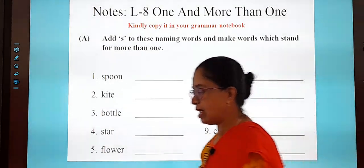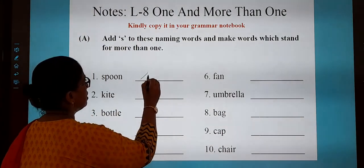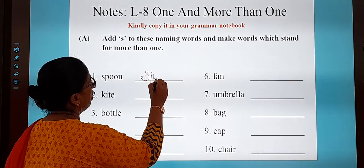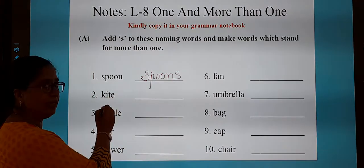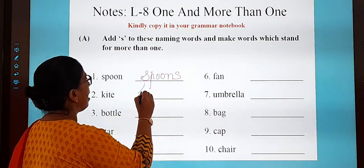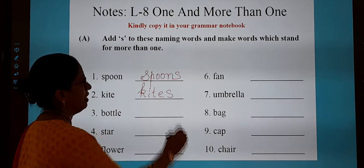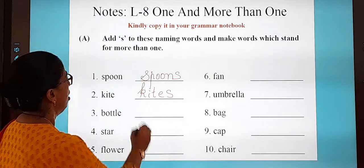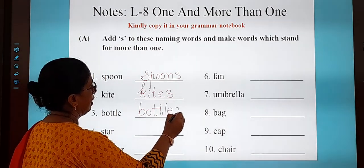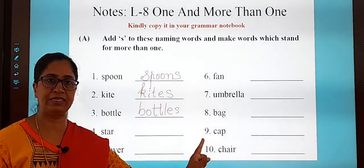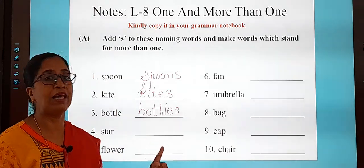It's very simple — you only have to add S. Let me do one or two for you. Spoon — singular — so the plural is spoons: S-P-O-O-N-S. Kite — the answer is kites: K-I-T-E-S. Bottle — bottles: B-O-T-T-L-E-S. Just add S.